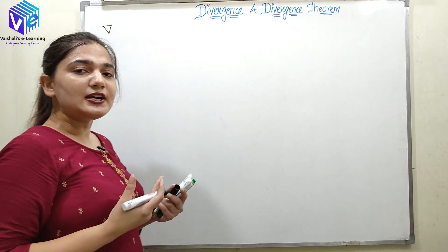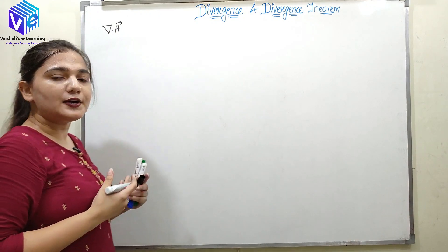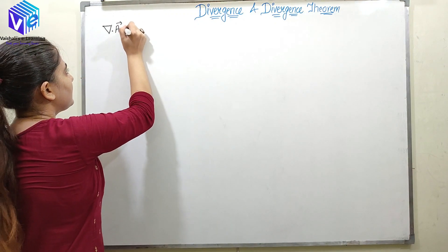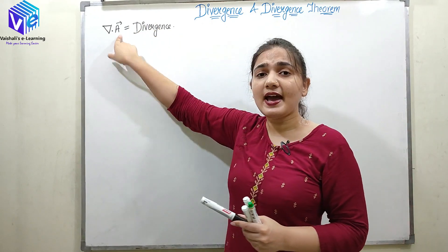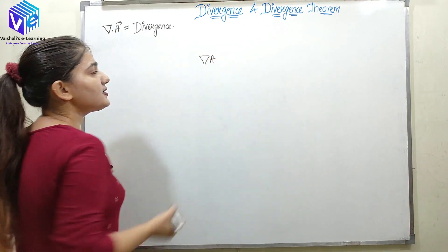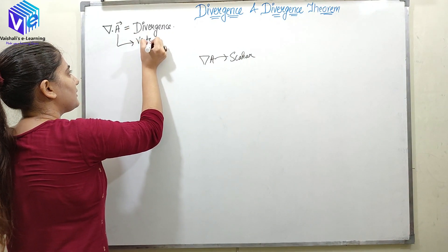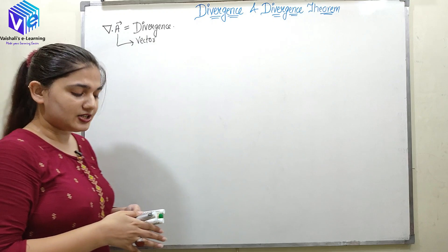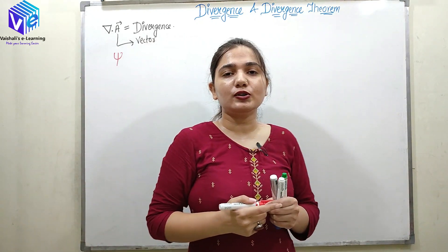Divergence is the second use of the del operator. Recall from the previous video that del can have a dot product with any field. So if A is my field, I can compute del dot A, which represents the divergence. For this dot product, the field A must be a vector quantity — unlike gradient, which operates on a scalar, here A must be a vector.